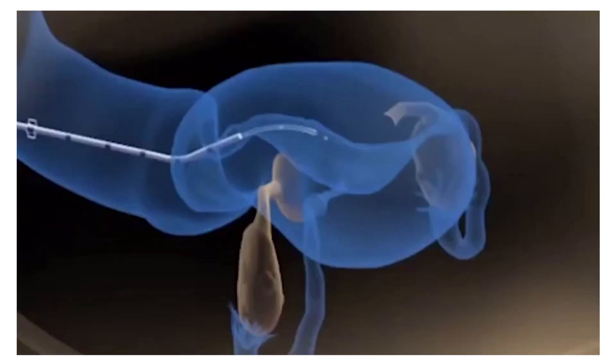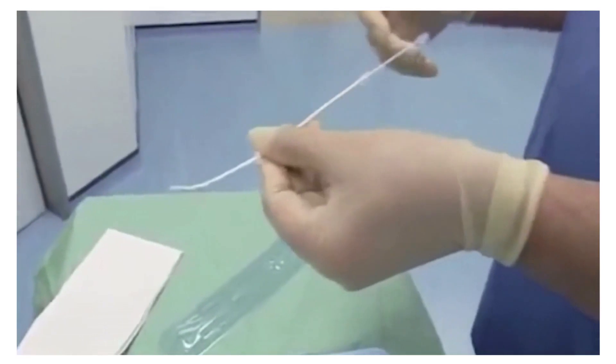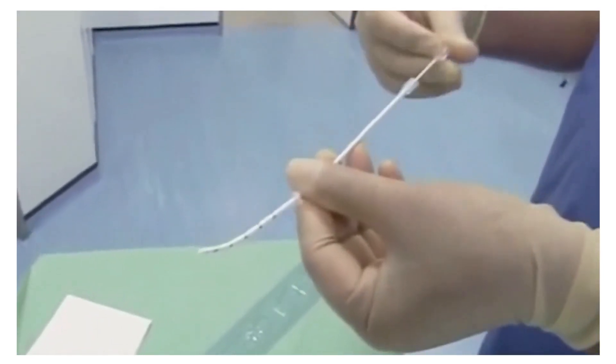The physician will then insert the catheter through the uterine cervix into the uterus. With the catheter in place, the physician will then inject the embryo into the uterus.